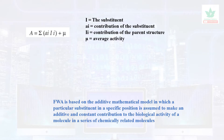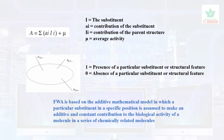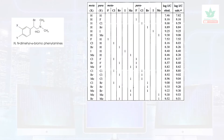The substitutions have to contribute to the biological activity additively. The equation represents biological activity as the sum of the contribution of the substitution, contribution of the parent structure, and the average activity. Log 1/C is represented as the biological activity value. The presence of a particular substituent or structural feature is given as 1, and the absence is represented as 0. The Free-Wilson approach is based on an additive mathematical model in which a substituent at a specific position makes an additive constant contribution to the biological activity.